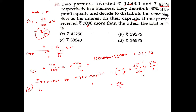Interest on the second partner's capital: 2x divided by 5 multiplied by 17 divided by 42, which equals 17x divided by 105.